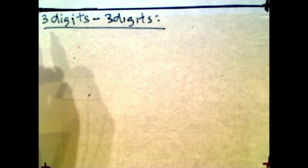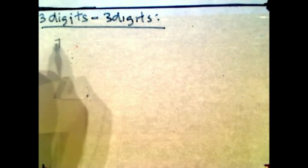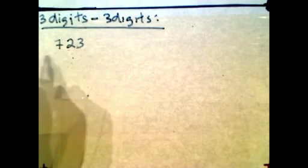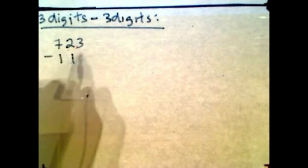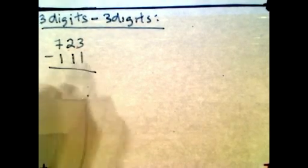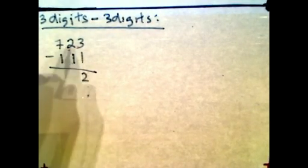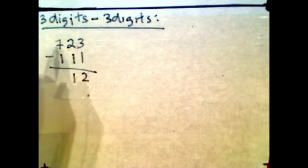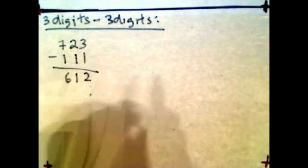Lastly, we're going to do 3-digit minus 3-digit. Let's say we have 723 minus 111. This is pretty easy: 3 minus 1 is 2, 2 minus 1 is 1, and 7 minus 1 is 6. So the answer is 612.